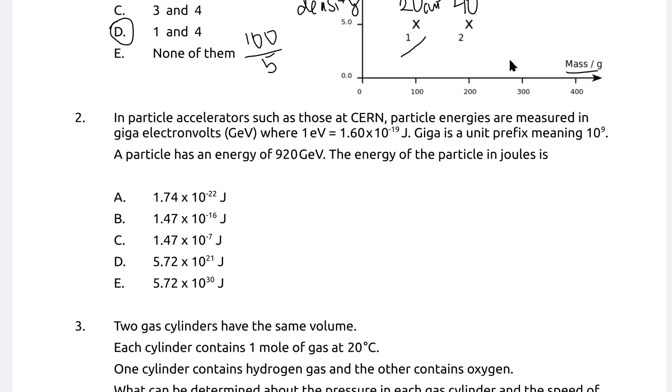In a particle accelerator, such as those at CERN, particle energies are measured in giga electron volts. Giga is a unit prefix meaning 10 to the 9. And what we need to do is convert the energy from 920 giga electron volts to joules. 920 giga electron volts: giga means times 10 to the power of 9, and the electron volt means a multiplication factor of 1.6 times 10 to the power of minus 19. Let's put this into a calculator. So 920 times 10 to the power of 9 times 1.6 times 10 to the power of minus 19. And what we're going to get is 1.472 times 10 to the power of minus 7 joules. The correct answer will be C.